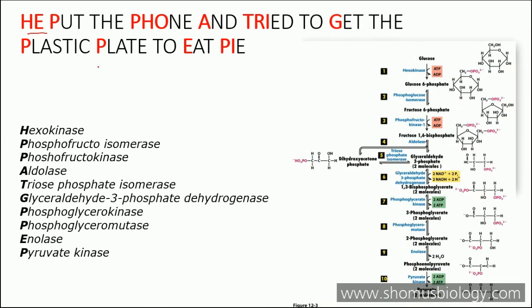Starting with HE — hexokinase, the first enzyme. Then P — phosphoglucose isomerase, the second enzyme. Then another P — phosphofructokinase, the third enzyme. Then A — aldolase, the fourth enzyme. Then TRI — triose phosphate isomerase, the fifth enzyme. Then G — glyceraldehyde-3-phosphate dehydrogenase, the sixth enzyme.